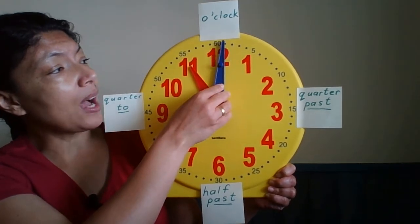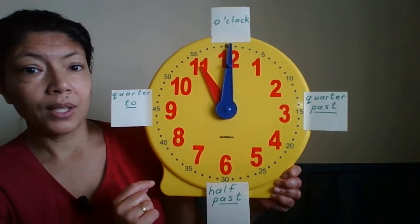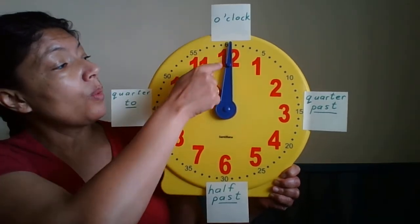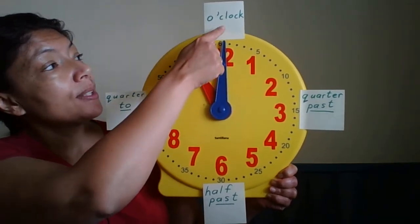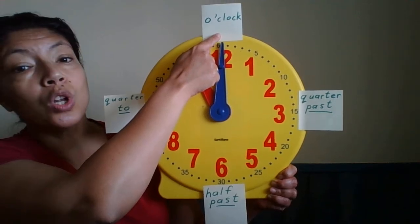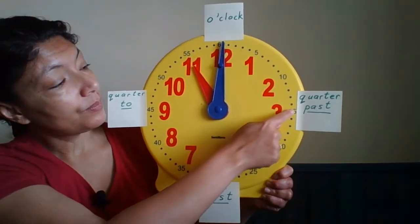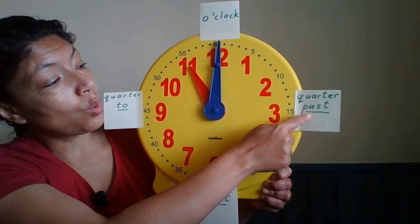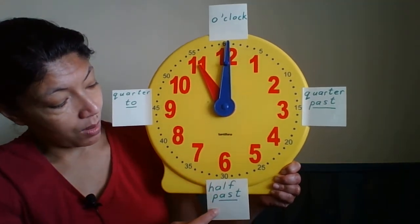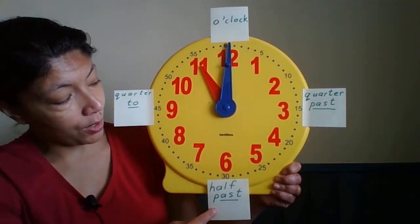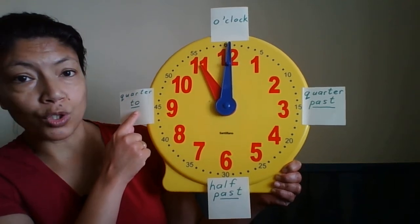Let's see how this works. Where the 12 is, it is o'clock. Quarter past. Half past. Quarter to.